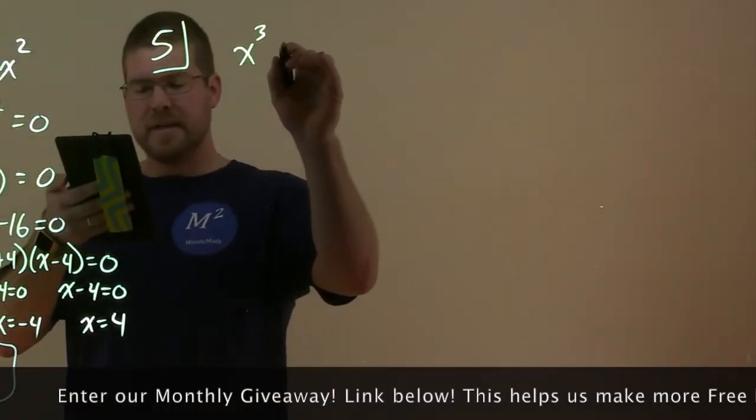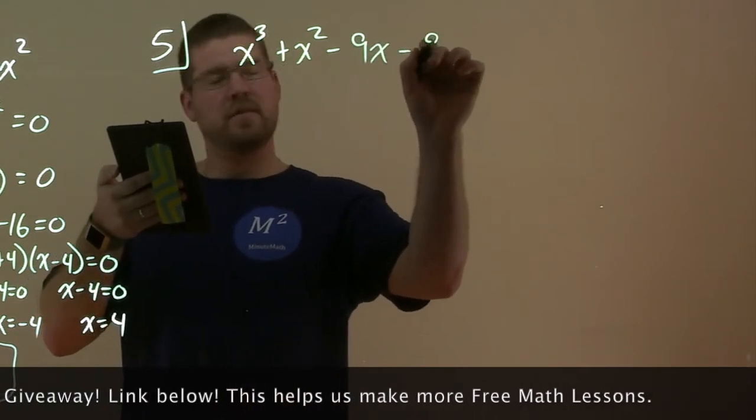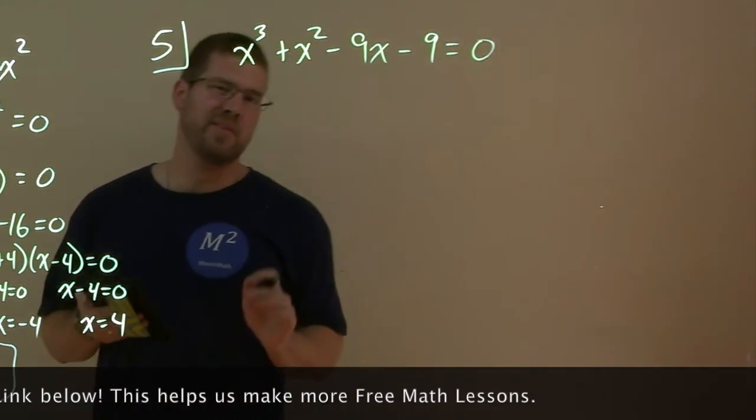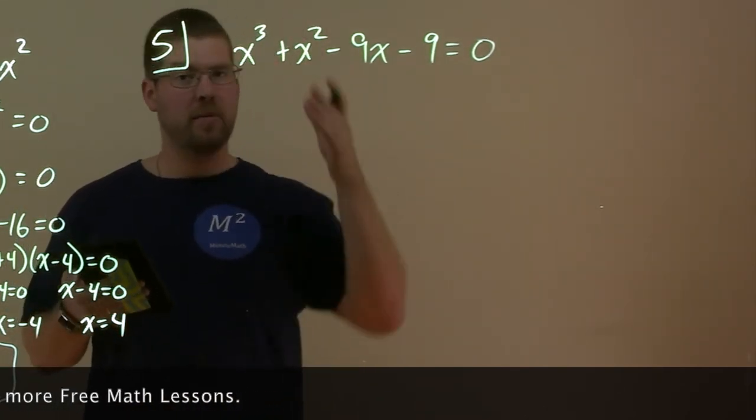So we have x^3 + x^2 - 9x - 9 = 0. And we want to solve this bad boy, all right? Well, they say grouping. That was the clue.